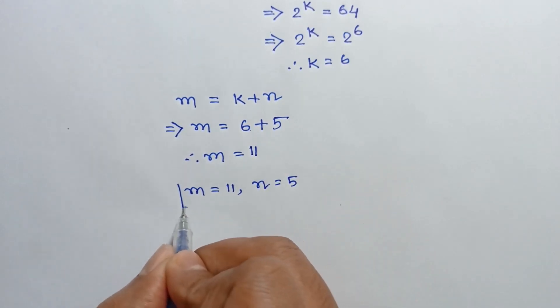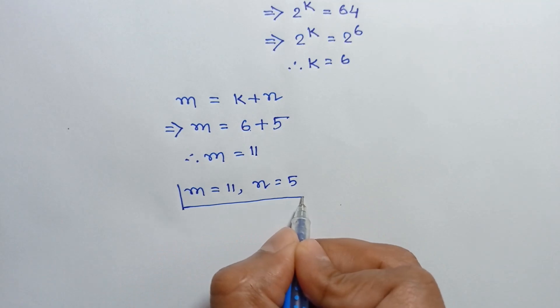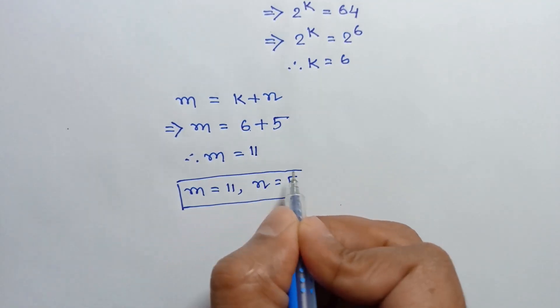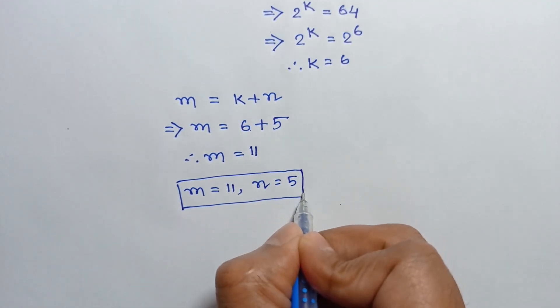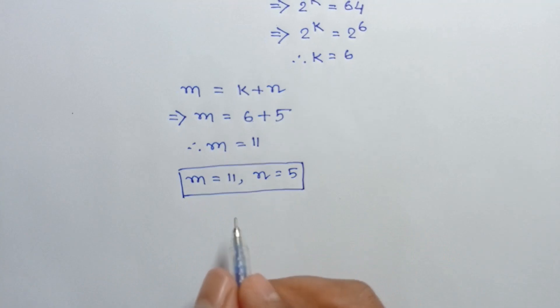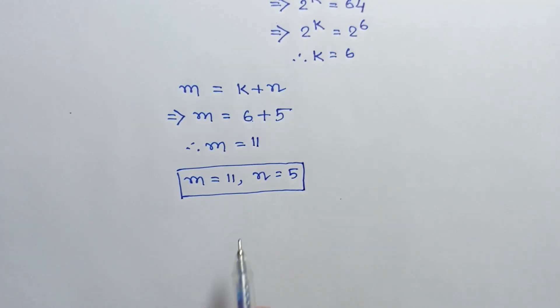So, finally, m is equal to 11 and n is equal to 5. This is the solution of the given equation. If you like this video, please subscribe to my channel. Thanks for watching.